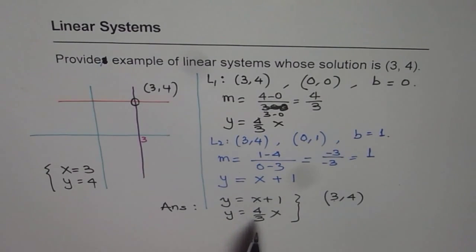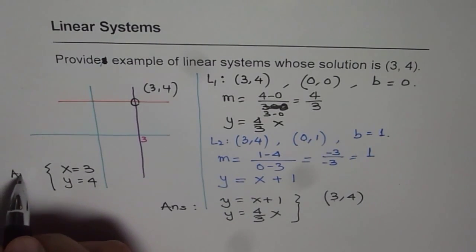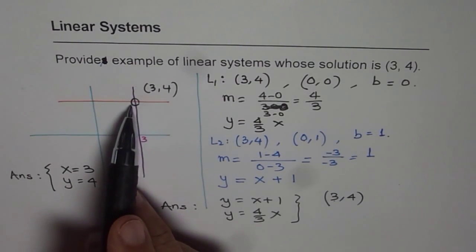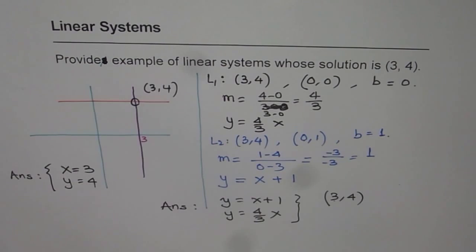So the best solution is the first one which I gave you, which is x equals to 3 and y equals to 4. So these two lines will intersect at only one point, which will be (3, 4). The other one, likewise, you can find many solutions or many systems of equations with the given solution of (3, 4). Thank you.